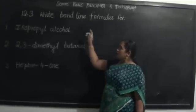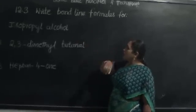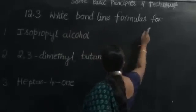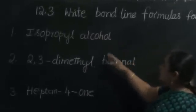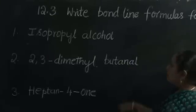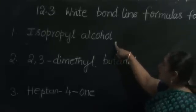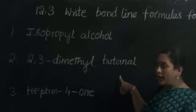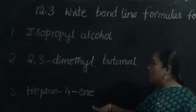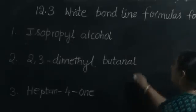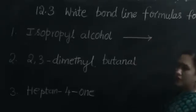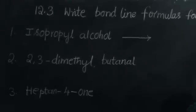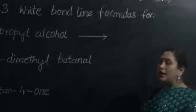Let us discuss question 12.3 in the same exercise. The question is: write bond-line formulas for the names of the compounds given to us. Once we analyze the structure, we would be in a position to write its bond-line formula.